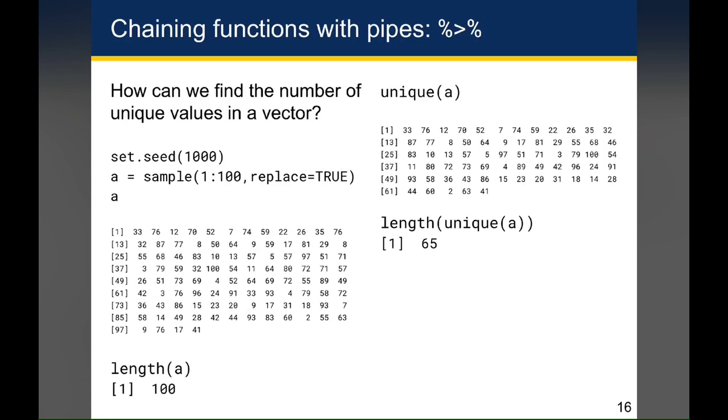So after setting the seed, I use the sample function with the vector 1 through 100, which tells it to pick randomly from the values between 1 and 100, with the argument replace equals true, which just says that I should be sampling with replacement. In other words, when I'm picking values 1 through 100, and I'm doing that 100 times, I should consider all the values every single time such that I might select the same number twice.